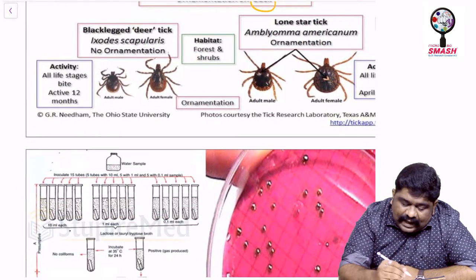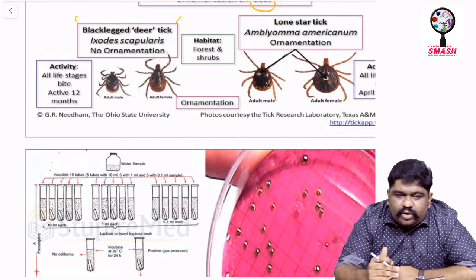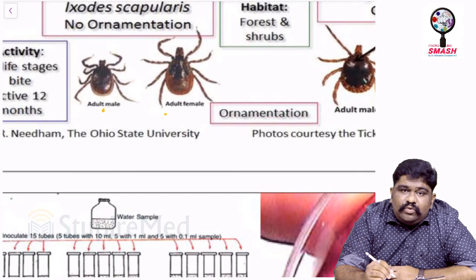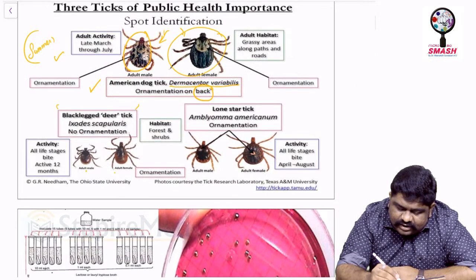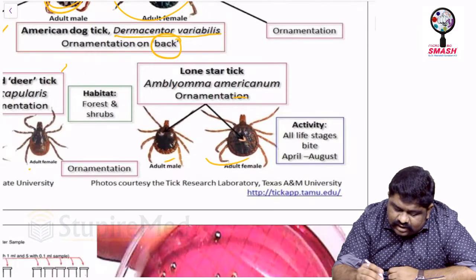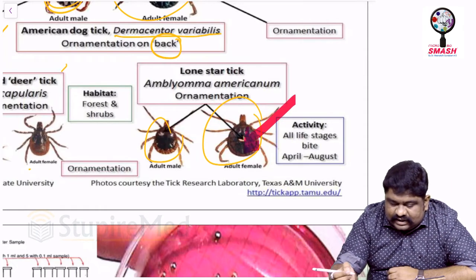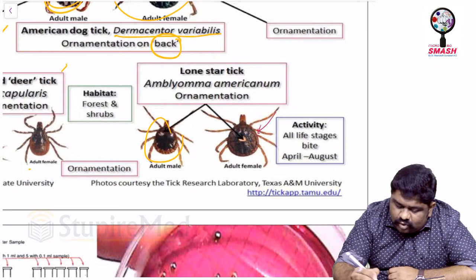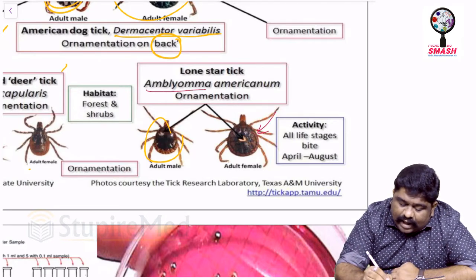The black-legged deer tick, Ixodes scapularis, is technically a deer tick that comes over to human beings. The female is bigger in size than the male in almost all situations. In the lone star tick, you can see exactly one single star-like region of ornamentation — when you see a single small pointed ornamentation, think lone star tick (Amblyomma americanum).